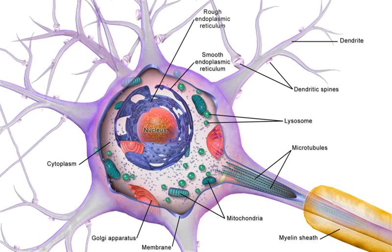There are many different specialized types of neurons, and their sizes vary from as small as about 5 micrometres to over 10 millimetres for some of the smallest and largest neurons of invertebrates, respectively.